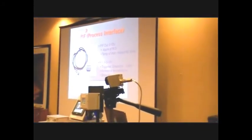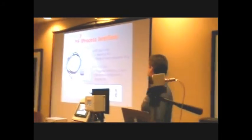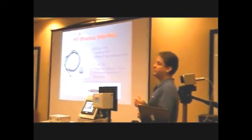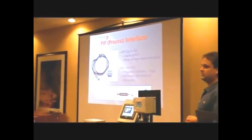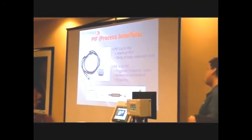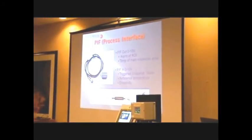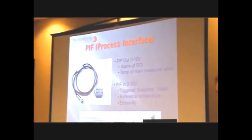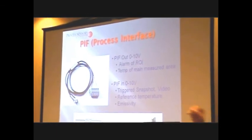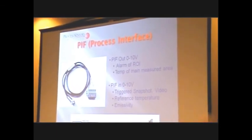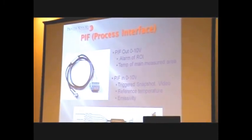The PIF in, yet again, uses the zero to ten. We can trigger a snapshot. That's an image from the camera itself that's running on a computer. We can also activate a sequence of video. So if you had an alarm event, you could... let me rephrase that. If you had a kiln, for instance, you could send in a proximity switch signal that basically starts an image which starts the rotation of the image of the actual kiln itself. So you could actually get a full video of the complete rotation.